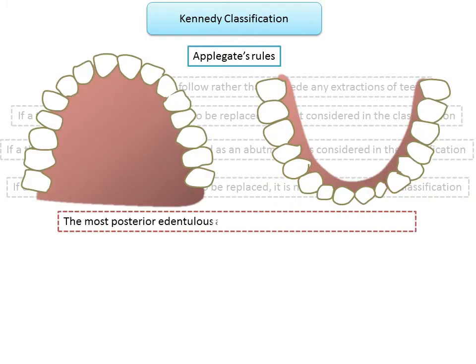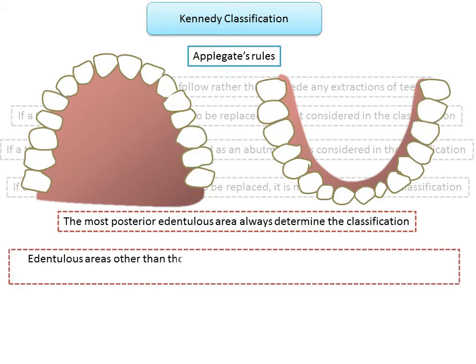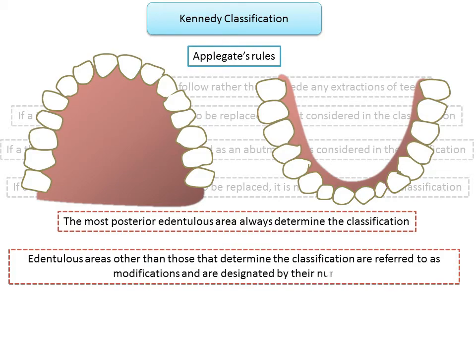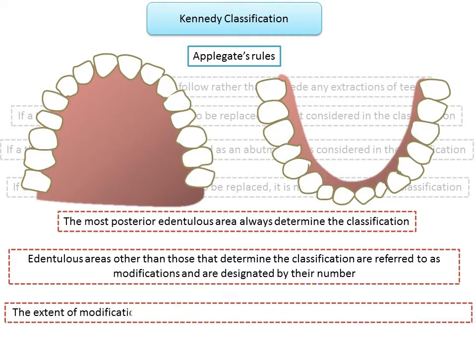Rule 5: the most posterior edentulous area or areas always determine the classification. If there are multiple edentulous spaces, it is the most posterior region that determines the class, and the rest of the edentulous spaces add up as modifications. Rule 6: edentulous areas other than those which determine the classification are referred to as modification spaces and are designated by their number.